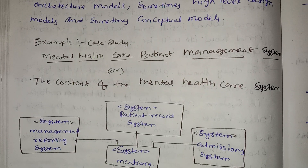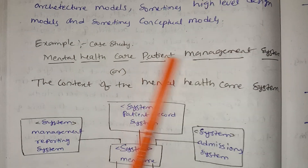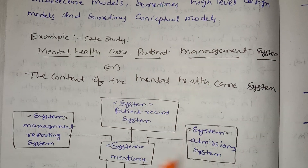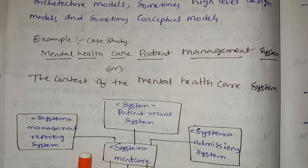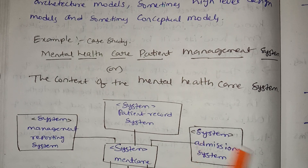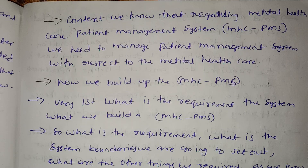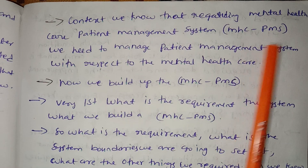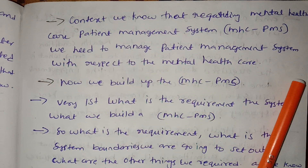For example, as a case study, we will look at a Mental Health Care Patient Management System — MHC PMS. We will examine the context of the mental health care system and its components. Regarding MHC PMS, we need to manage the patient management system with respect to the mental health care context.